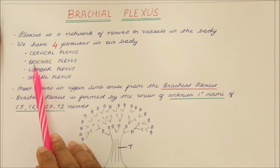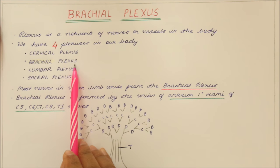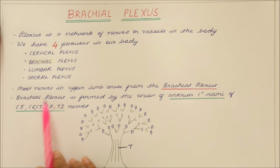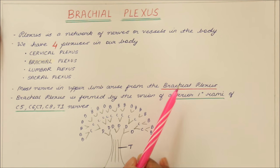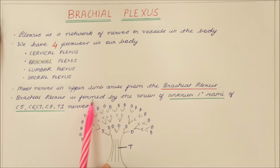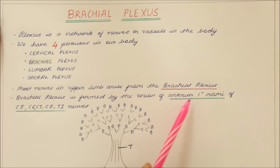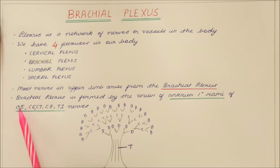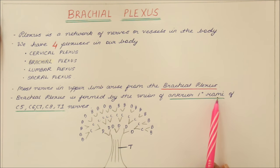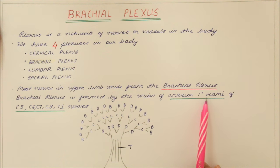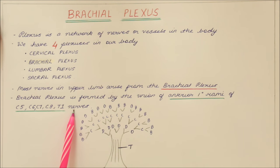In this video we will be learning about the brachial plexus. Most nerves in the upper limb arise from the brachial plexus. It is formed by the union of the anterior primary rami of C5, C6, C7, C8 and T1 nerves. Rami means branches, so the brachial plexus is formed by the union of the anterior primary branches of the C5 to T1 nerves.